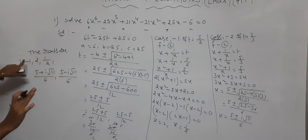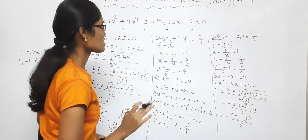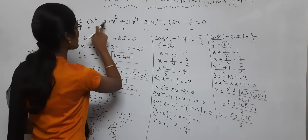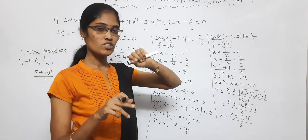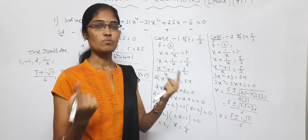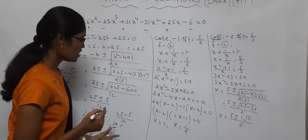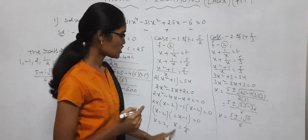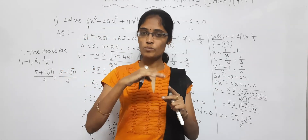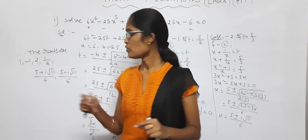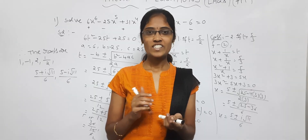Therefore the roots are: 1, minus 1, 2, 1 by 2, 5 plus i root 11 by 6, and 5 minus i root 11 by 6. We get 6 roots in total, as expected for a degree 6 equation. This is the process: first identify the reciprocal equation class, apply synthetic division for plus 1 and minus 1, then solve for t and substitute to get x values. Very important. If you like the video, like, share and subscribe.